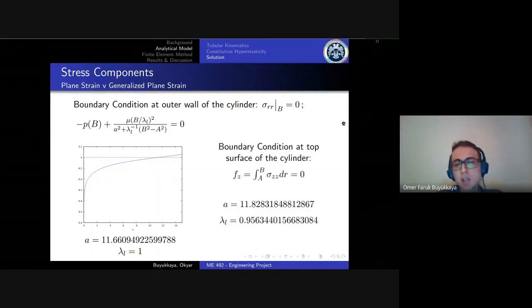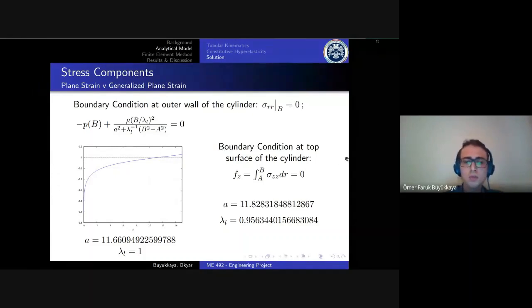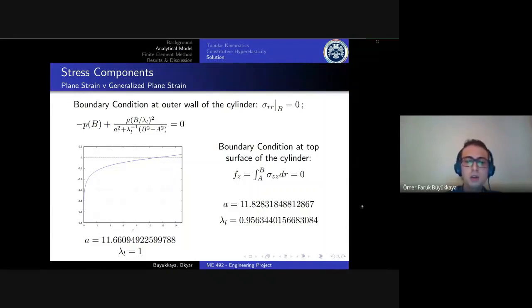For generalized plane strain case we need another equation because we don't know lambda_l either. For generalized plane strain case the top of the cylinder is equilibrated, all the surface moves on the same surface. Thus the integration of the axial stress must be equal to zero. We find A is around 11.8 and lambda_l is just a little lower than one.